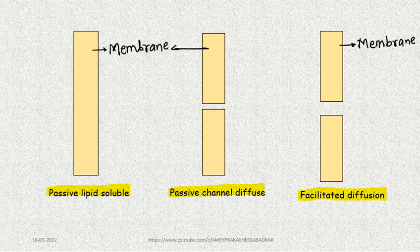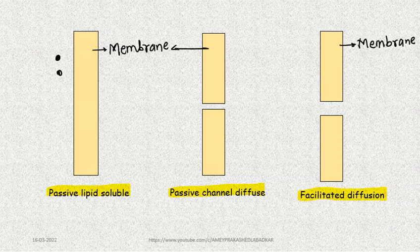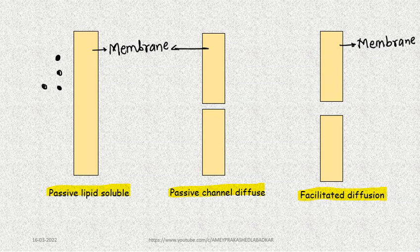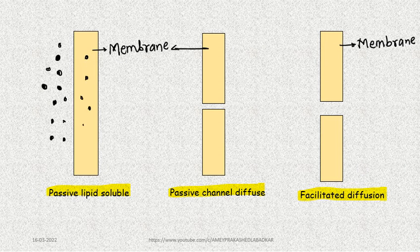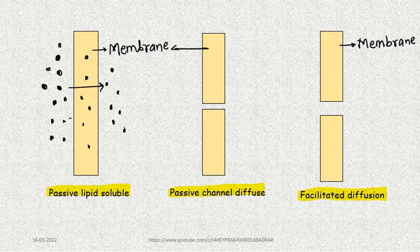In the diagram, molecules of different sizes are on the outer side of the membrane. They pass through the membrane and reach the inner part of the cell — this direction represents the movement of substances.